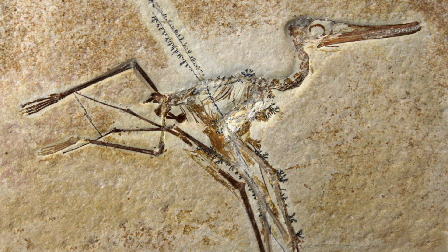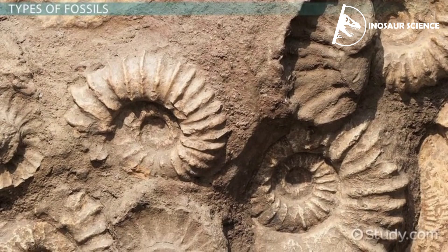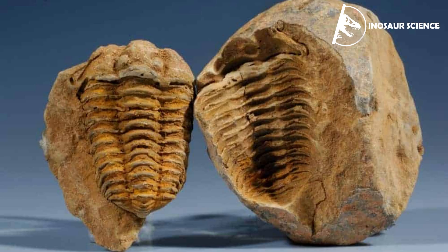A mold is an imprint left by the shell on the rock that surrounded it. There are two types of molds. An external mold is a mold of the outside of the shell — each time we break a shell or bone out of the rock, an external mold is left behind. Internal molds are formed when sand or mud fills the inside of the shell, leaving a mold of its underside on the surface of the resulting rock.